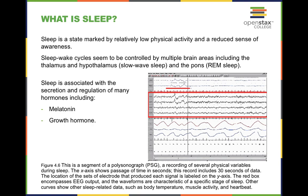Sleep is a state marked by relatively low physical activity and a reduced sense of awareness. Sleep-wake cycles seem to be controlled by multiple brain areas, including the thalamus as well as the hypothalamus. Sleep is super important for adults' cognitive and physical functioning. For teenagers, growth hormone is stimulated by sleep — that's probably why a friend comes back six inches taller after a summer of sleeping a lot.